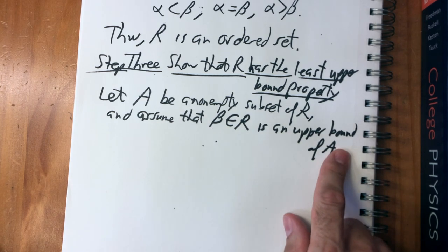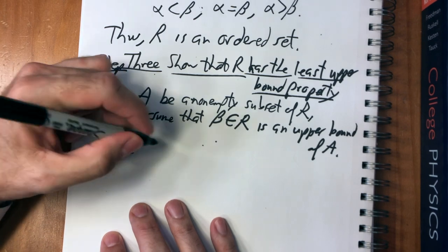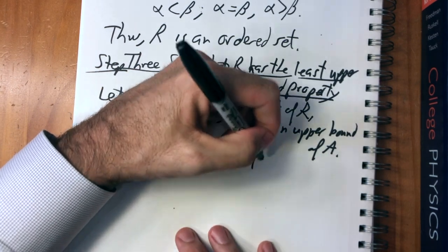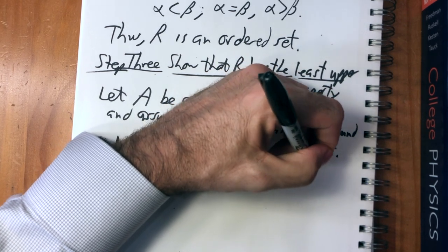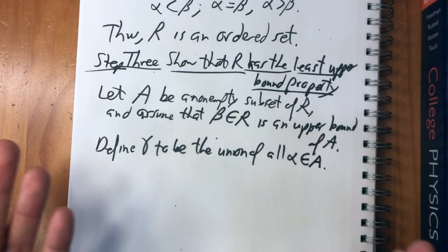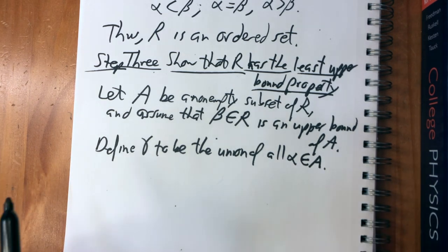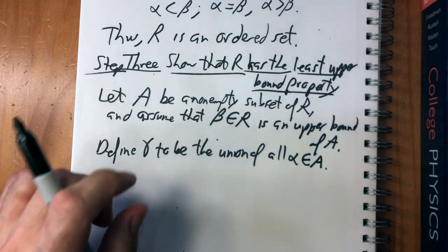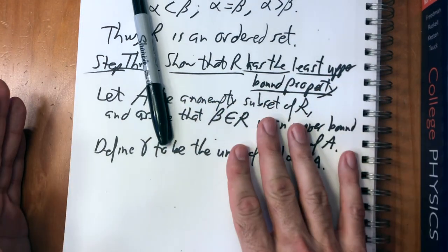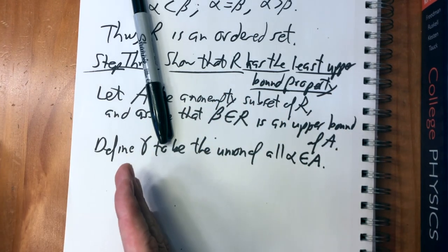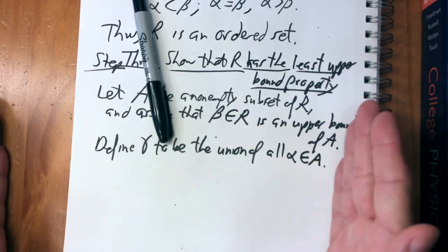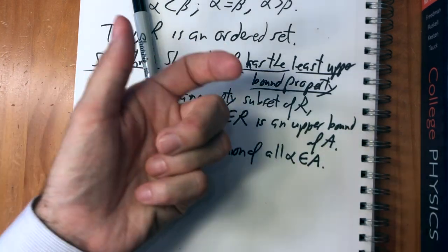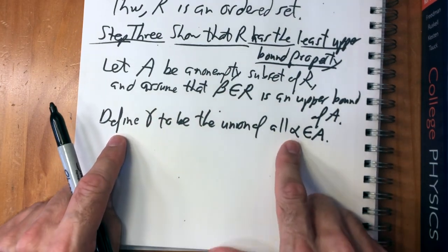A has some number of these sets; it's bounded from above. We take all the elements of A, take a union of those elements, and call that gamma. Gamma is itself a subset of the rational numbers, because we took a bunch of subsets of rational numbers and took their union. P is an element of gamma if and only if P is an element of alpha for some alpha in A — gamma is just the union of all the alphas, so every element must belong to some alpha.